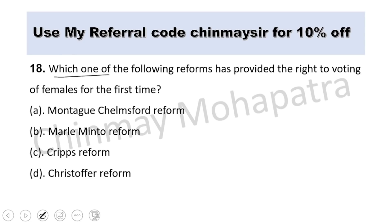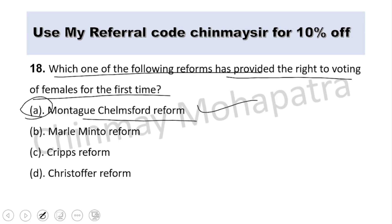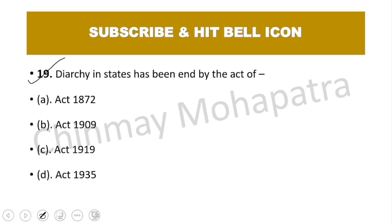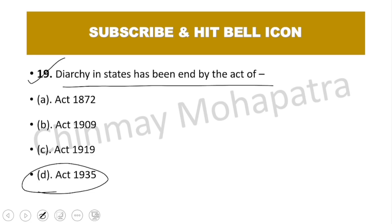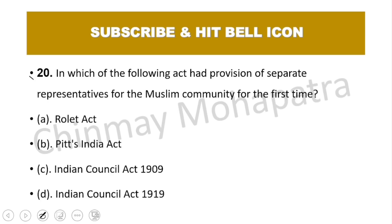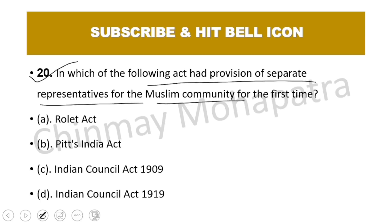Question number 18: Which reform provided the right to vote for females for the first time? The right answer is the Montagu-Chelmsford Reform. Question number 19: Dyarchy in states was ended by which act? The right answer is the Act of 1935 — the two-headed administration system ended under the 1935 Act. Question number 20: Which act had the provision of separate representation for the Muslim community for the first time? The right answer is the Indian Council Act 1909.